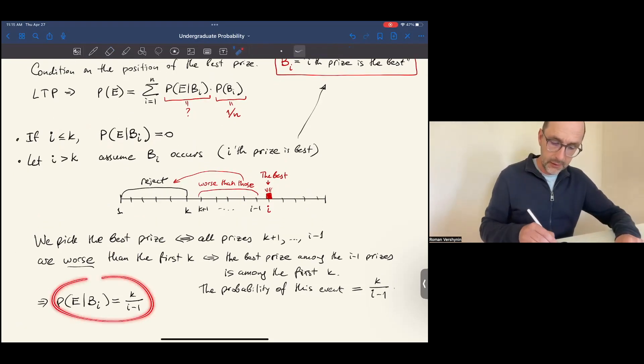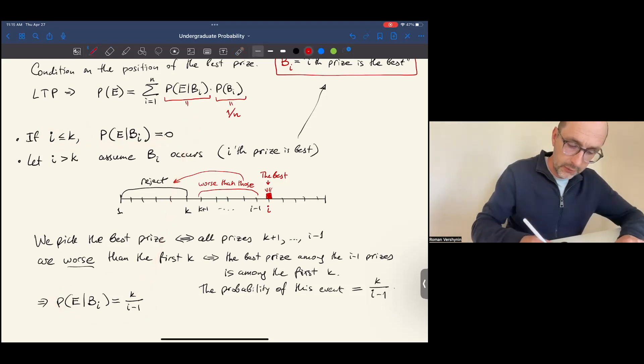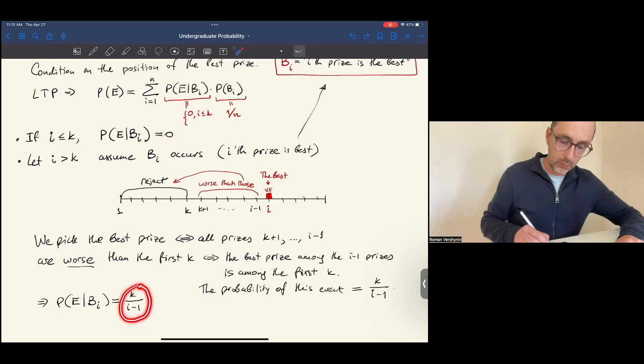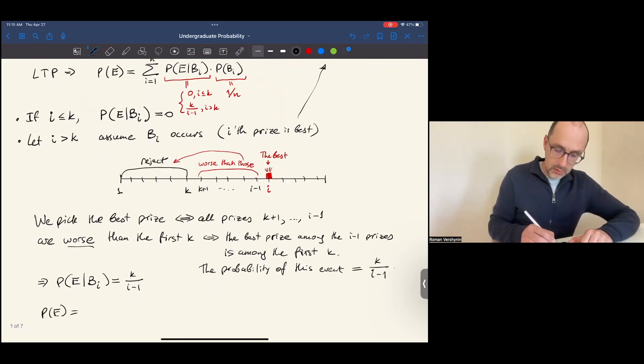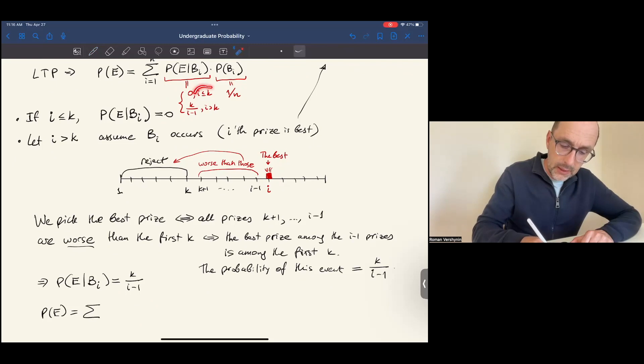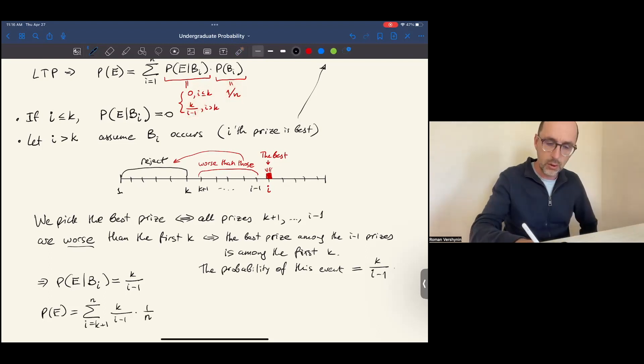So we can plug this value into this sum. Then this term becomes 0 if i is less than k, and k over i minus 1 if i is greater than k. Great. P of E equals the sum. The first k indices will automatically be 0, so the sum starts from k plus 1, and the terms are this times this.